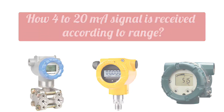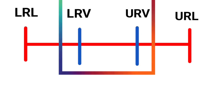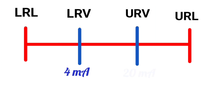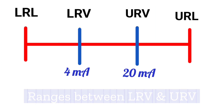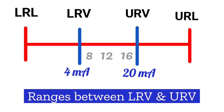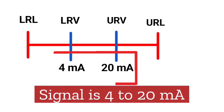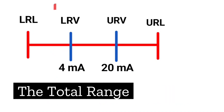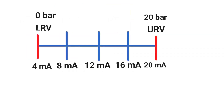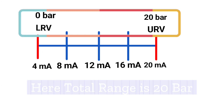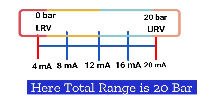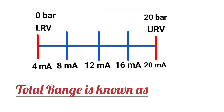We have a very simple method to understand this. The output at LRV and URV will be respectively 4 milliampere and 20 milliampere. Now, take the ranges between LRV and URV: 4, 8, 12, and 16 milliampere. There is a very easy trick for this: because the signal is 4 to 20 milliampere, whatever the total range is, you will divide it by 4. For example, 0 to 20 bar — its total range is 20 bar. One more concept to keep in mind: this total range is called span.